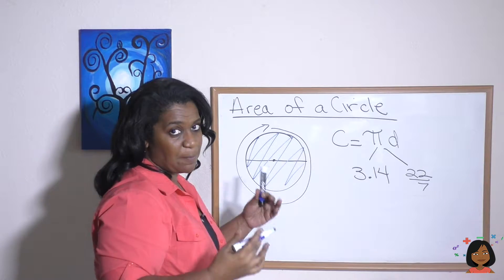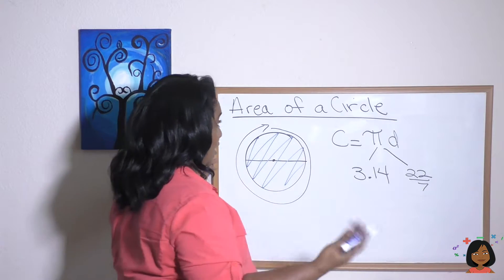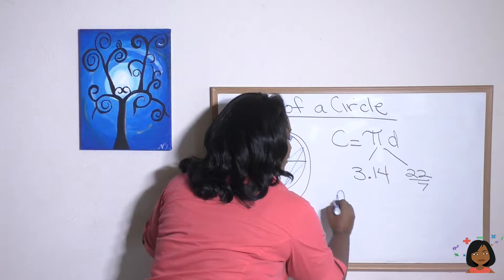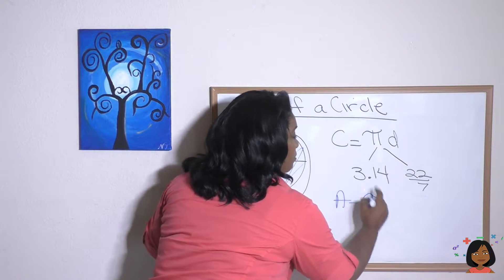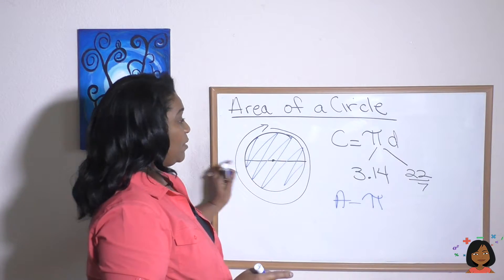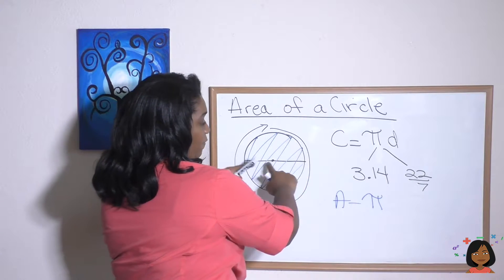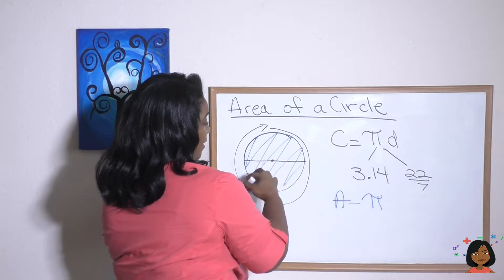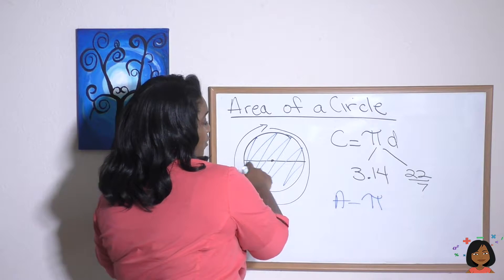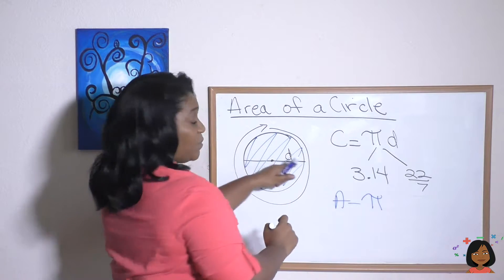So that has a separate formula. The area equals, we're going to start with pi, but this time, whereas our circumference used diameter, which was the full way going across here, it was this full cut across of a circle.